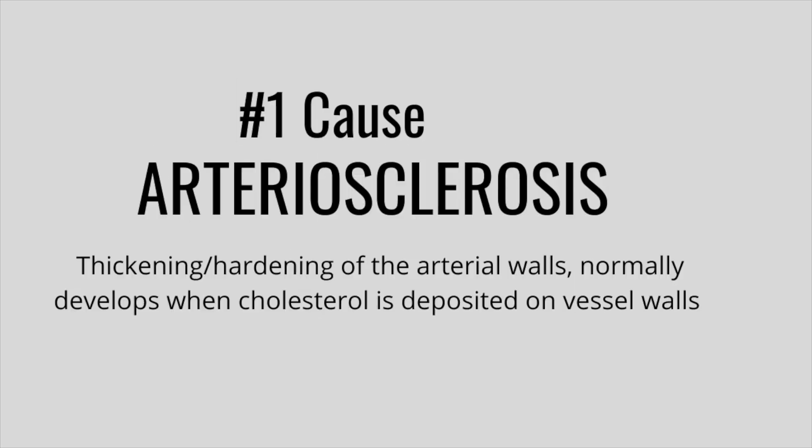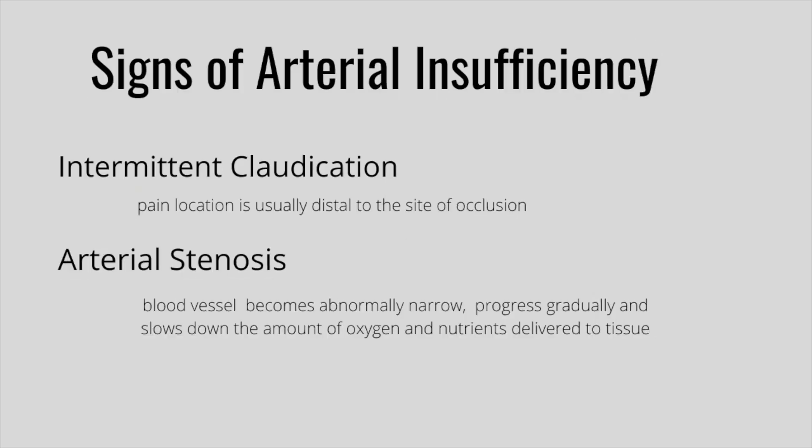Atherosclerosis is the thickening of the arterial walls. It begins when cholesterol is deposited on blood vessels, which is why patients with arterial insufficiency ulcers often have cholesterol issues. One of the first signs of arterial insufficiency is intermittent claudication — this is when the patient tells you they're having cramping or burning pain in their lower legs. The pain tends to go away one to five minutes after they have rested.